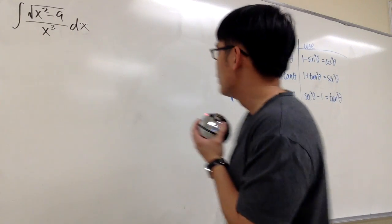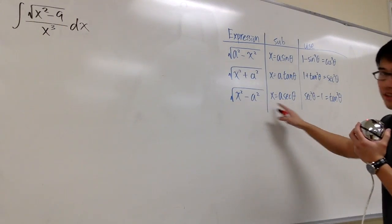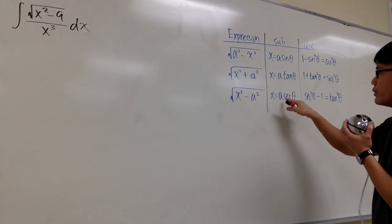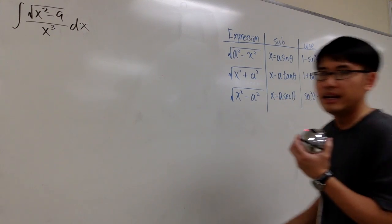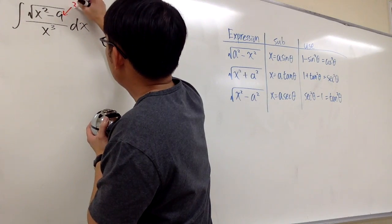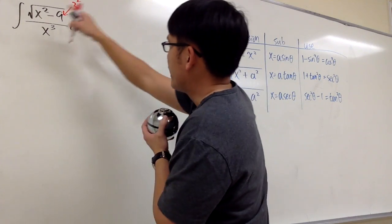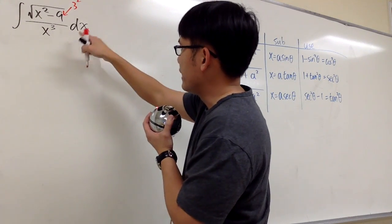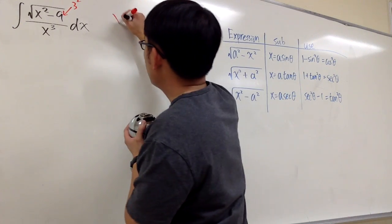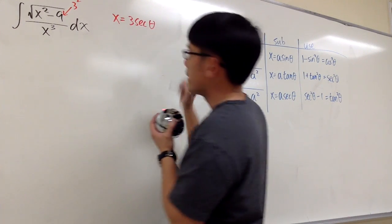We have the square root of x squared minus 9. Let's refer to this chart — that's the third situation. We begin by saying x is equal to a times secant theta. We have to look at the 9 as 3 squared, so a is equal to 3.